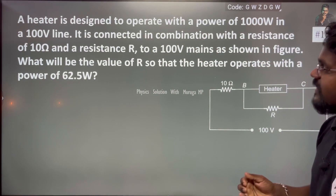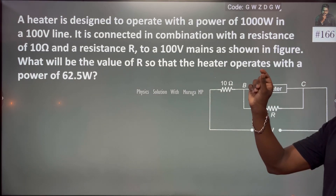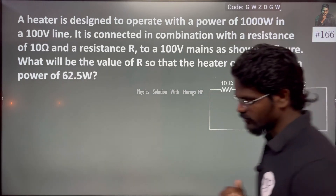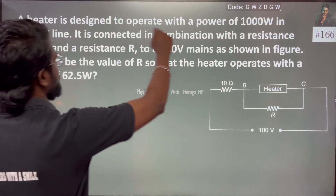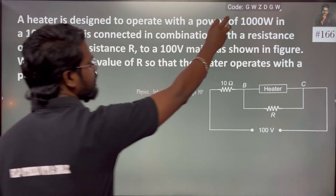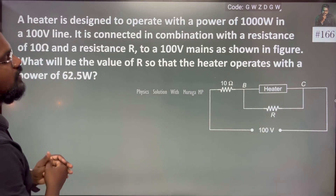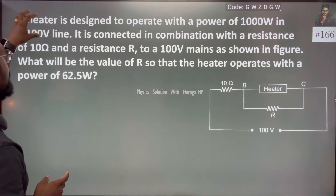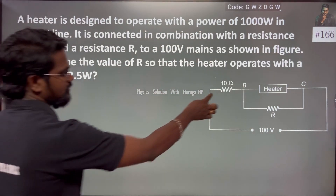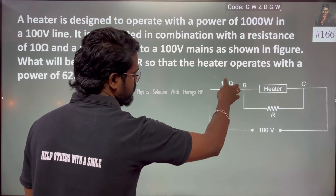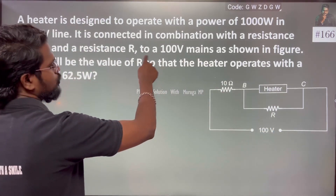A heater is designed to operate with the power of 1000 Watt at 100 V. It is connected in combination with a resistance of 10 Ohm, and connected to a 100 V line, as shown in the figure.